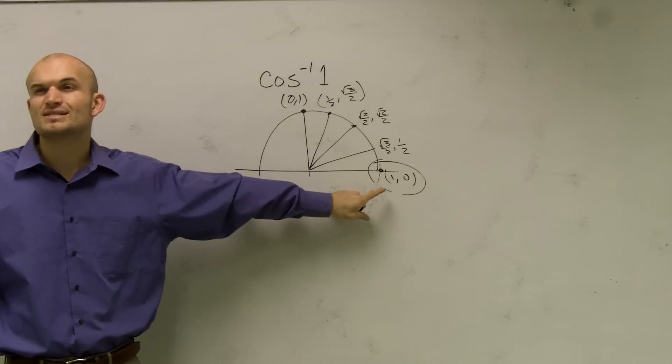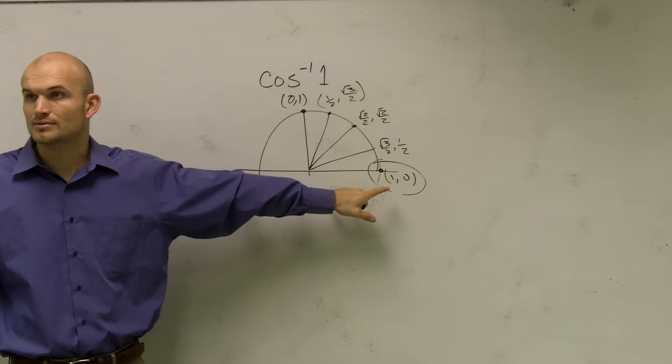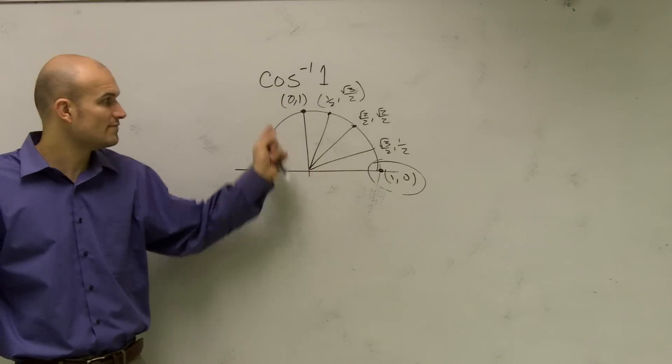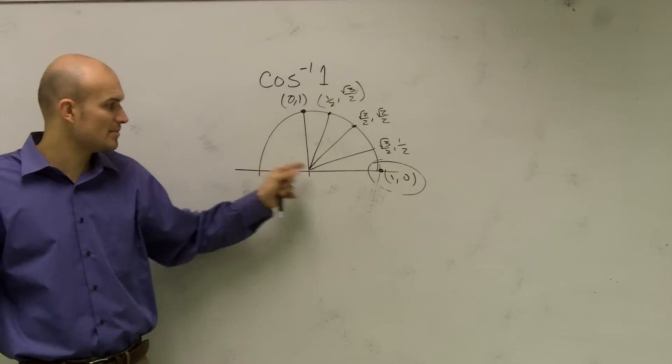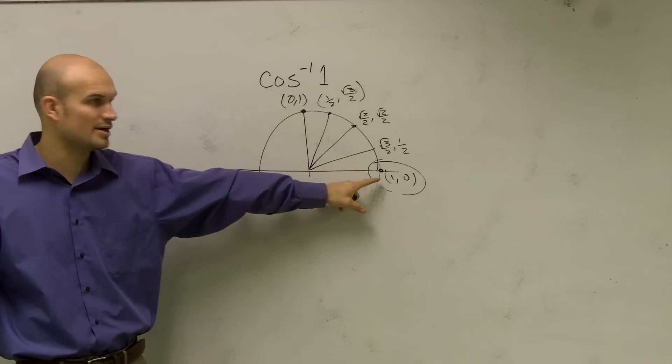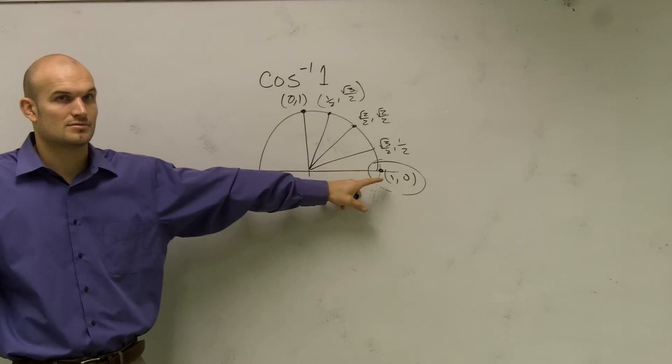So therefore, now I need to determine what is this angle at this point. So inverse cosine of 1, what is the angle? Remember, here's your initial angle. If you go up to here, how far did you go? Zero.